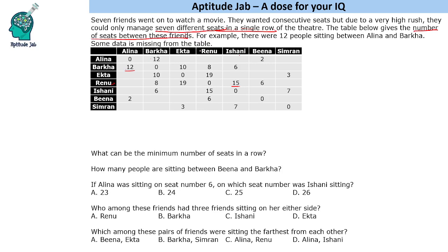Let's start with the set of people for whom we are given the maximum number of information. We have Barkha and Renu for whom we have the maximum numbers written. Let's put Renu first. Now between Barkha and Renu there are 8 people in between, so let's mark this 8 and put Barkha.